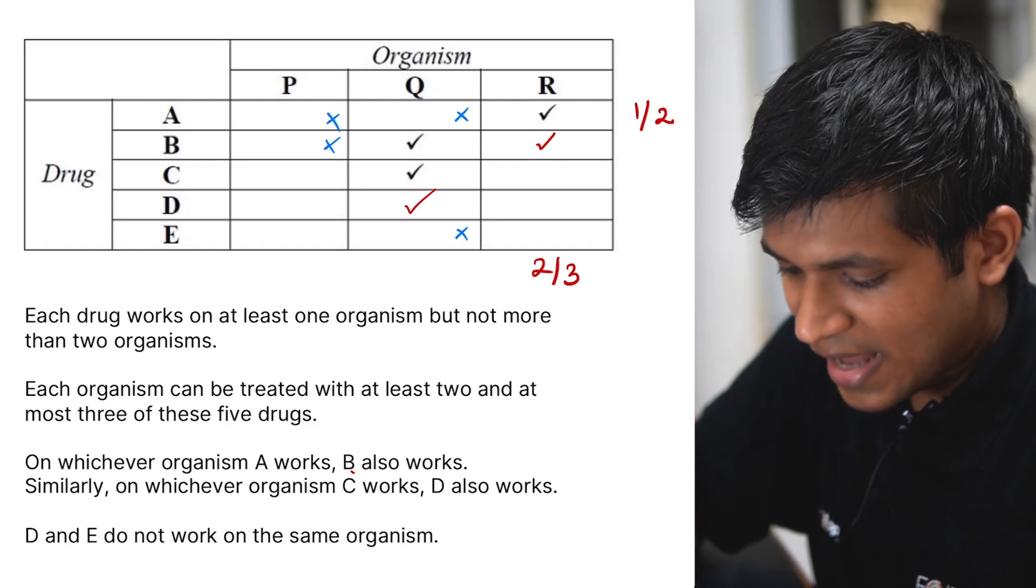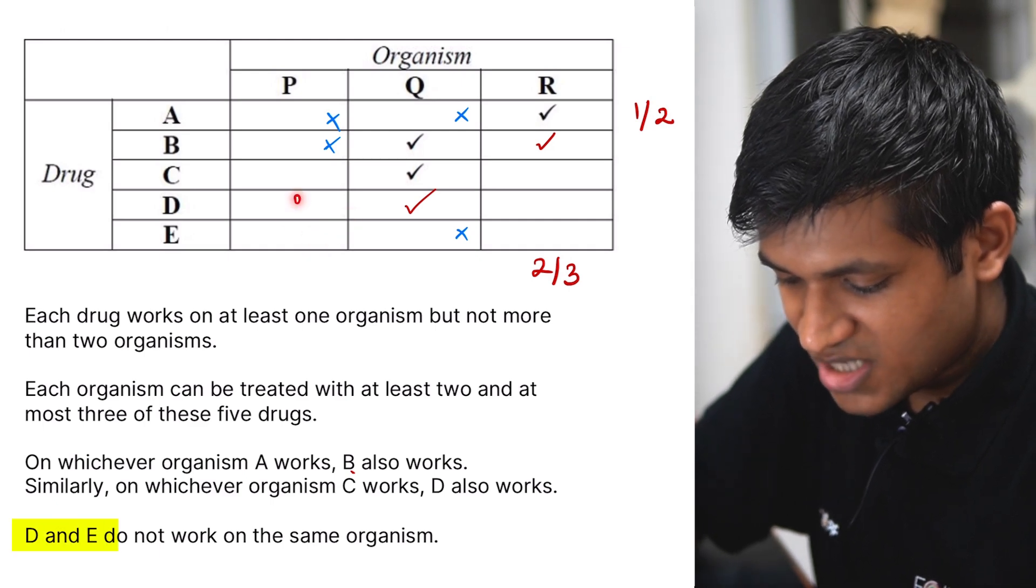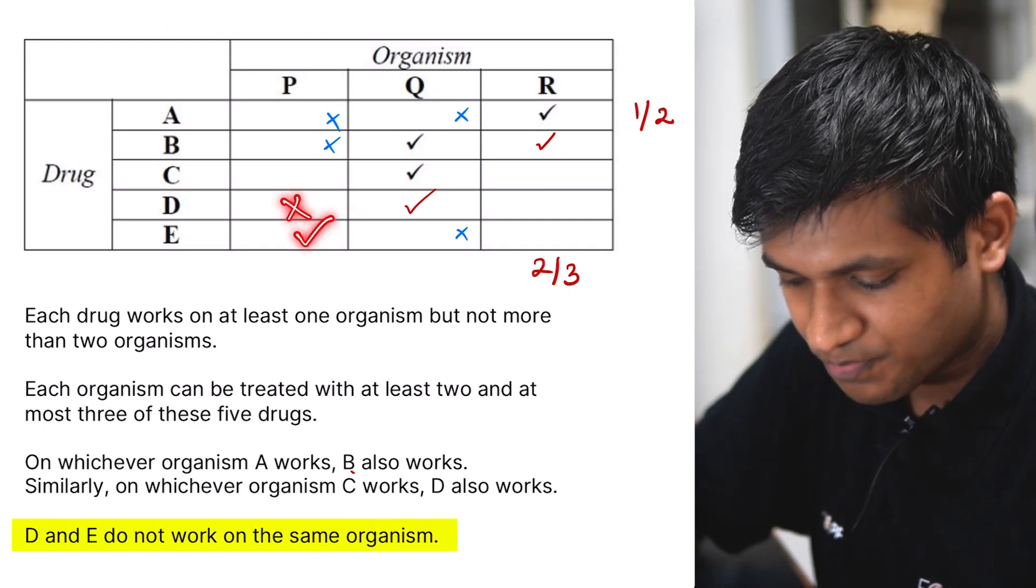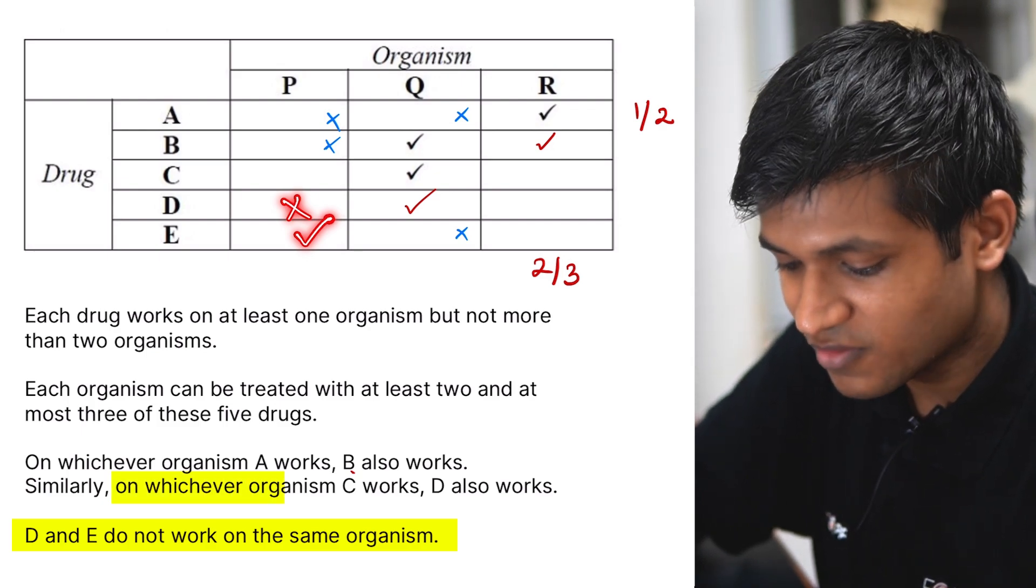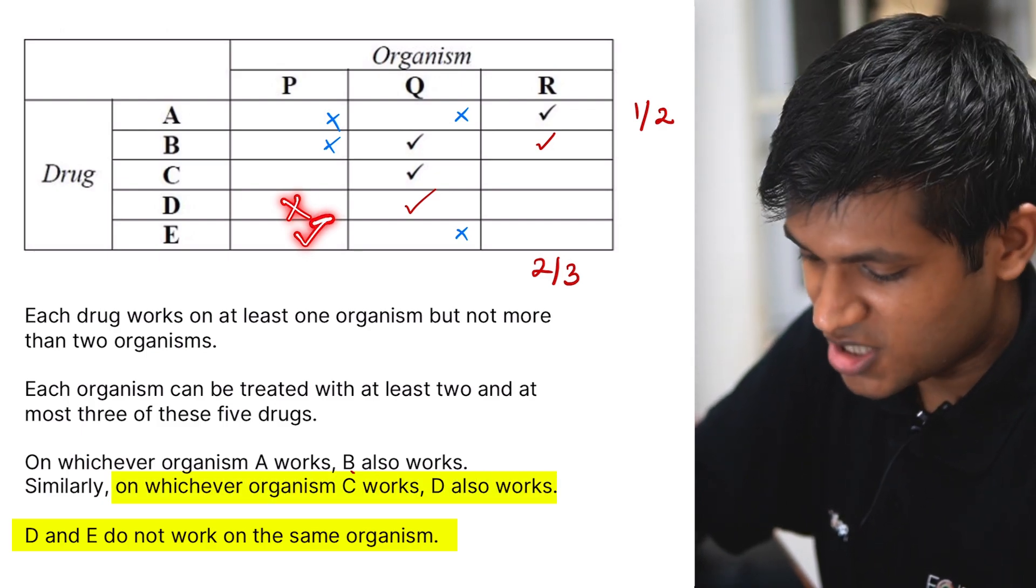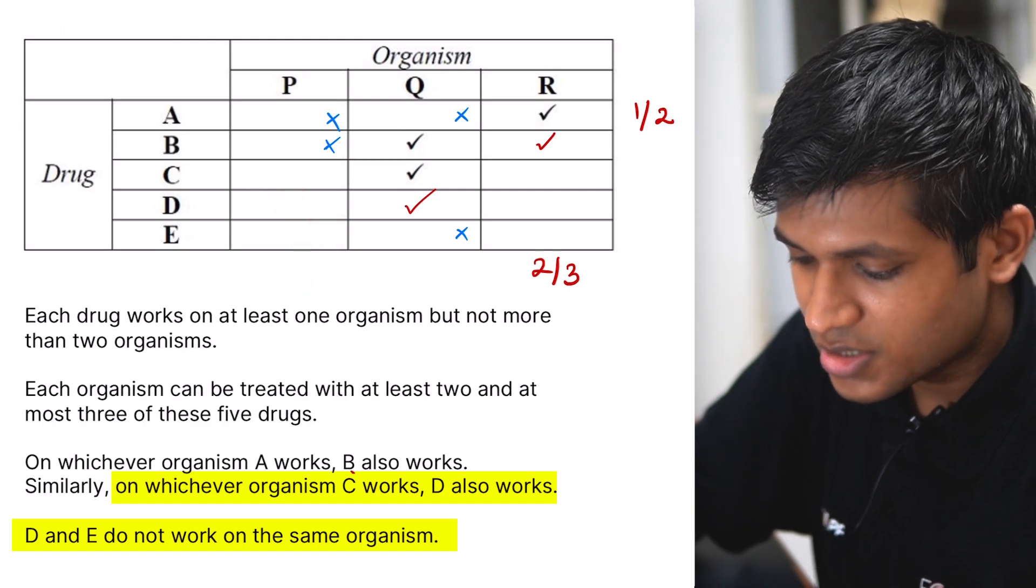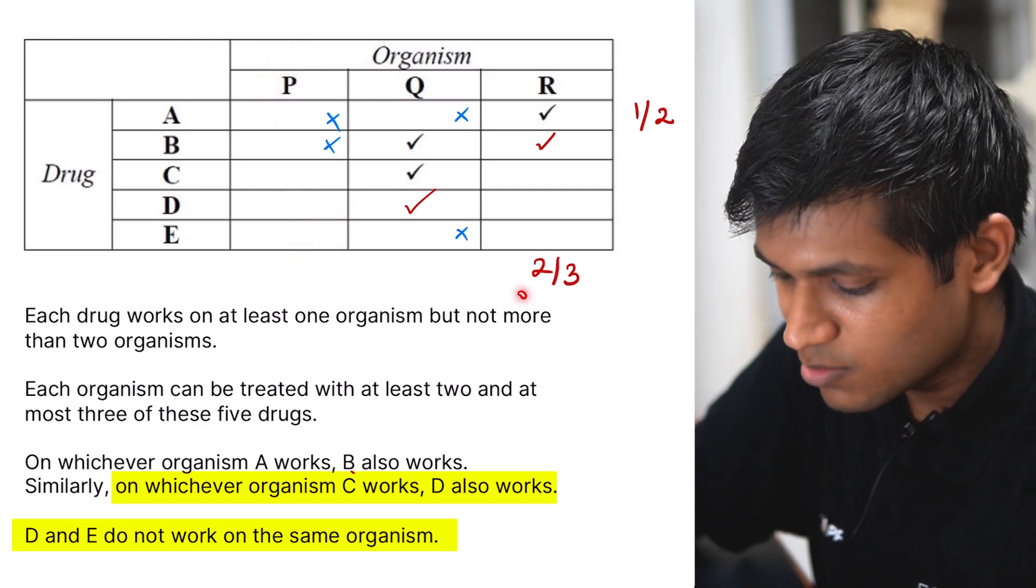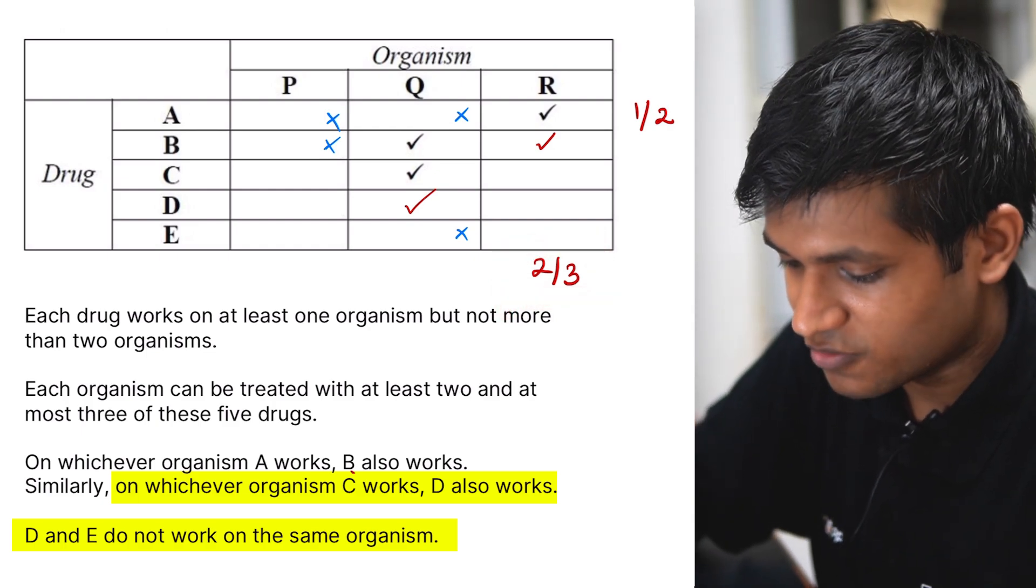So let us assume I put a tick in E. My D will be a cross and my C will also have to be a cross, because whatever organism works in C will have to work on D. But based on this, I have only one tick for this organism. But I need a minimum of two and maximum of three ticks. So this cannot work.